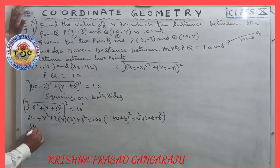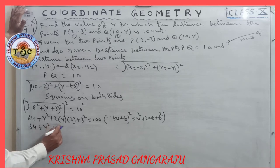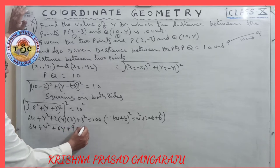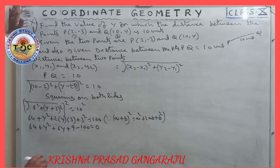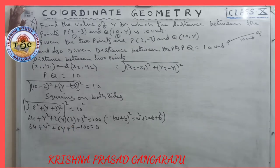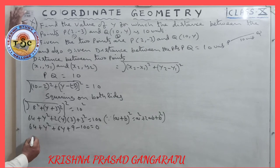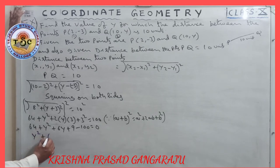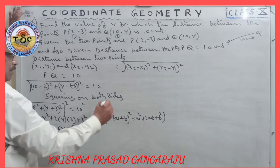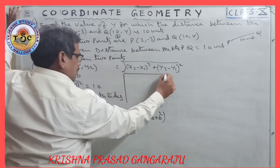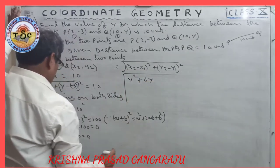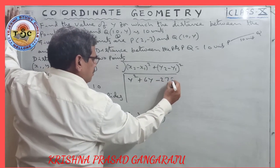So 64 plus y squared plus 6y plus 9 equals 100. Rearranging: y squared plus 6y plus 73 minus 100 equals 0, giving y squared plus 6y minus 27 equals 0.